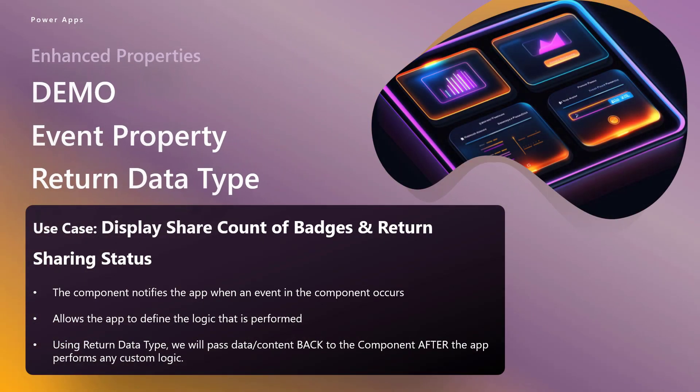So what does the demo look like? We're going to display a share count of badges on social networks, and then we're going to return the sharing status. The component is going to notify the app when an event occurs — in this case, clicking buttons within the component. The app defines the logic that is performed once that button click takes place. But now using a return data type, the story increases: the app has done something with that event and the parameters passed to it, and now it's going to pass content back to the component. It's a true round trip experience, really allowing you to go back and forth between your component and your app.